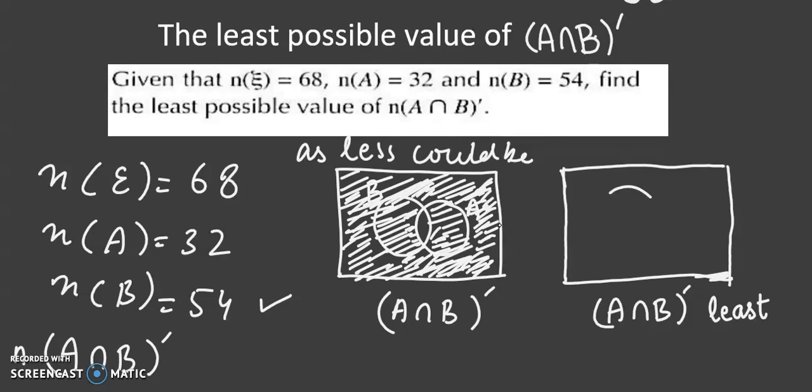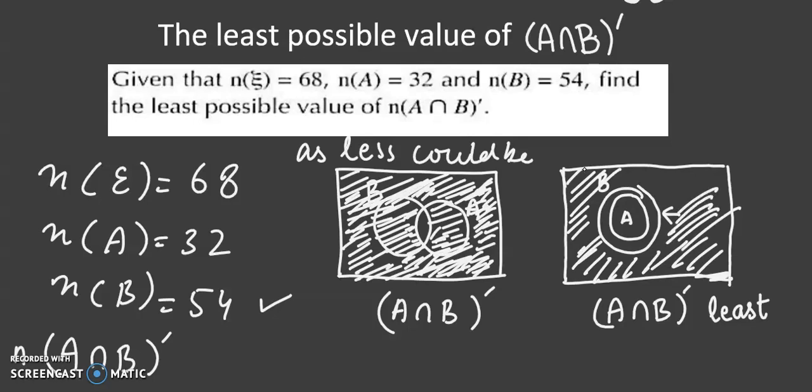So just think for a moment how can this shaded area become least. So let's have a look over here. This is the bigger set B. If the intersection becomes largest, it means that the A set entirely becomes the subset of B. Then we will be left with the shaded area like this. We will not shade A because it is now the intersection of A and B. However, we will shade this ring as well. So in this way this shaded area has become the least.